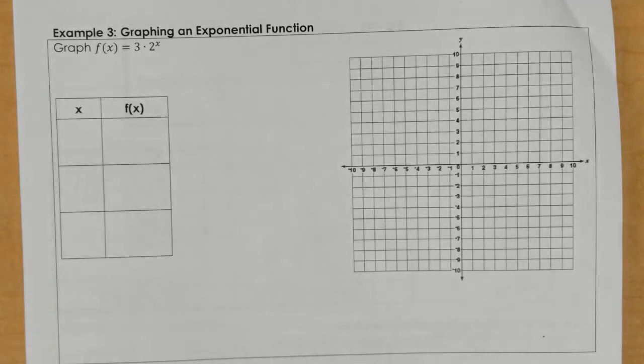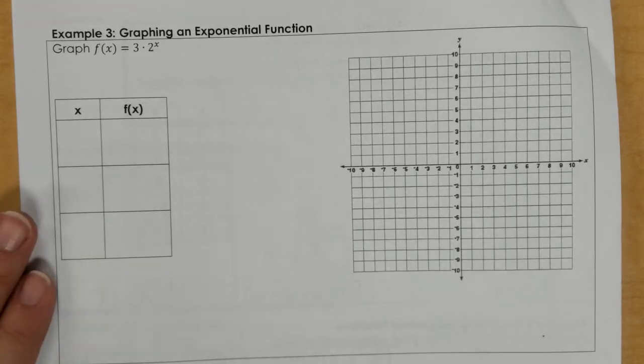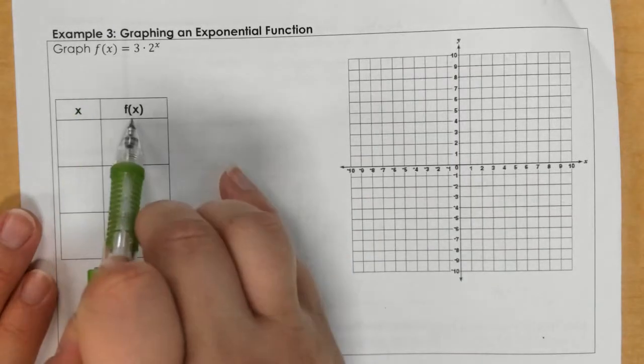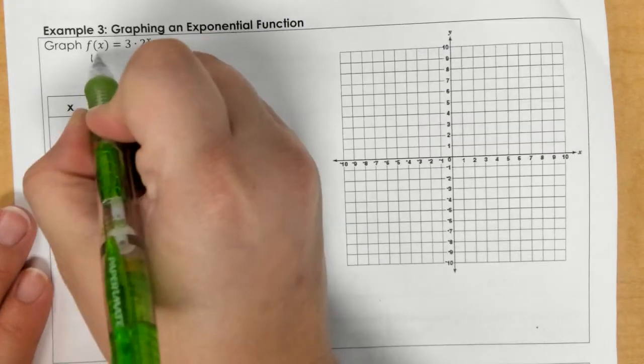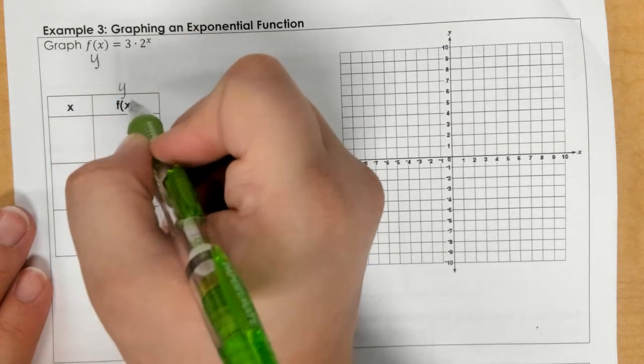For example 3, we need to graph this exponential function. First thing you want to think of is f of x is really a y, so let's mark that first. So, y equals 3 times 2 to the x power.